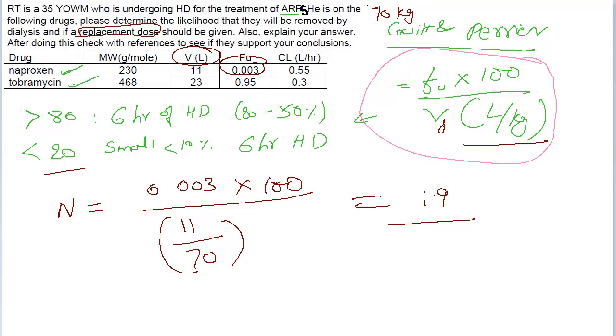Let's take a look at tobramycin. Tobramycin molecular fraction unbound is 0.95. What's this fraction unbound?